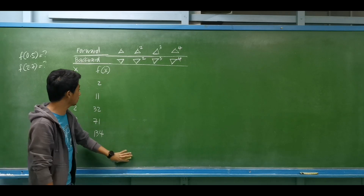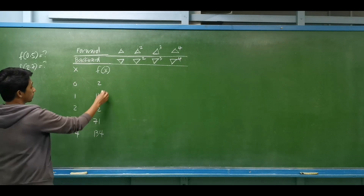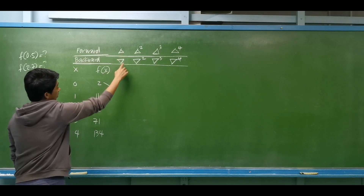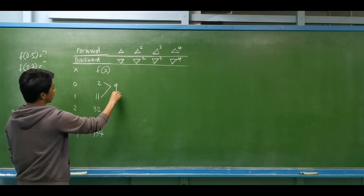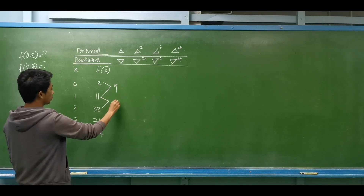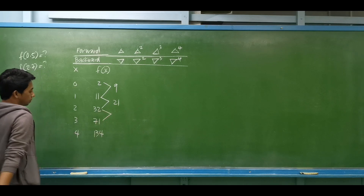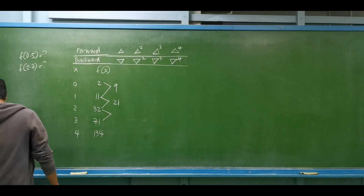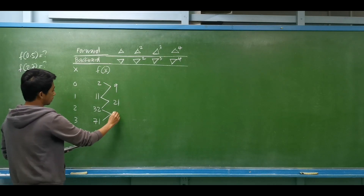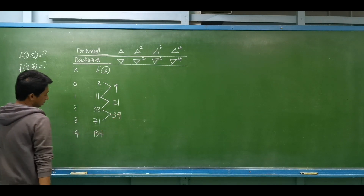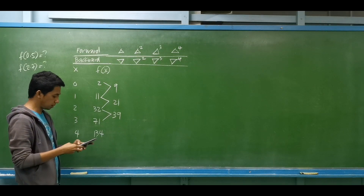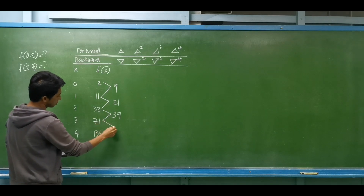Let us determine the first differences. We have 11 minus 2 is 9. Then 32 minus 11 is 21. Then 71 minus 32 is 39. Then 134 minus 71 is 63.